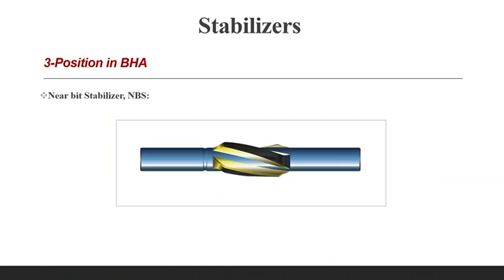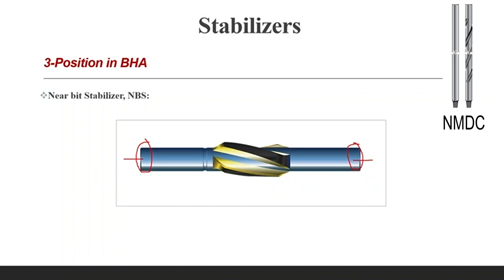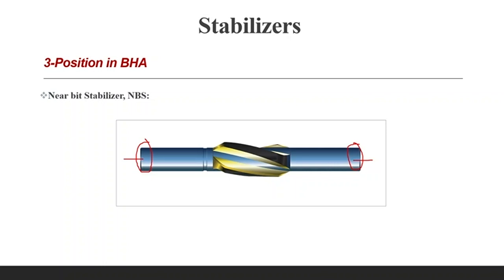According to position in the BHA, stabilizers are classified into two types: near-bit stabilizer and string stabilizer. The near-bit stabilizer is easily identified by having a double box connection — the bottom connected directly to the bit and the top connected to a non-magnetic drill collar or any part of the BHA. This type is recommended for keeping the bit rotating about its axis, as having a full gauge stabilizer near the bit prevents bit wobble and extends bit life.